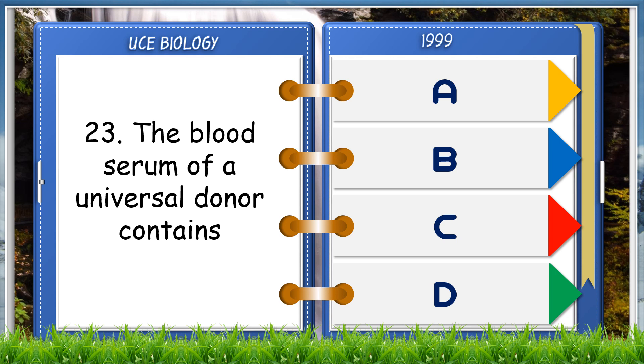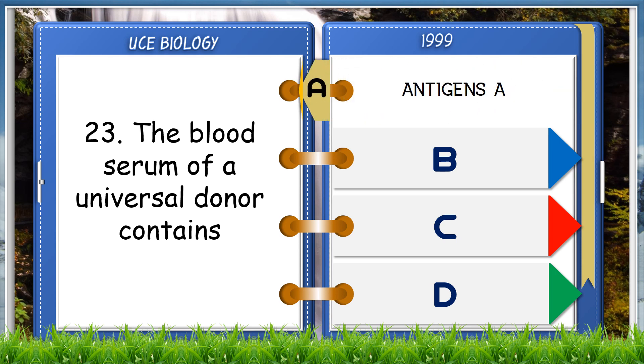The blood serum of a universal donor contains no antigens.